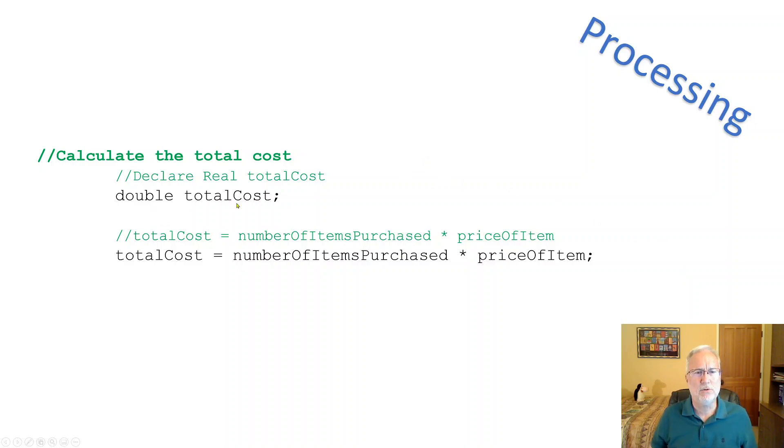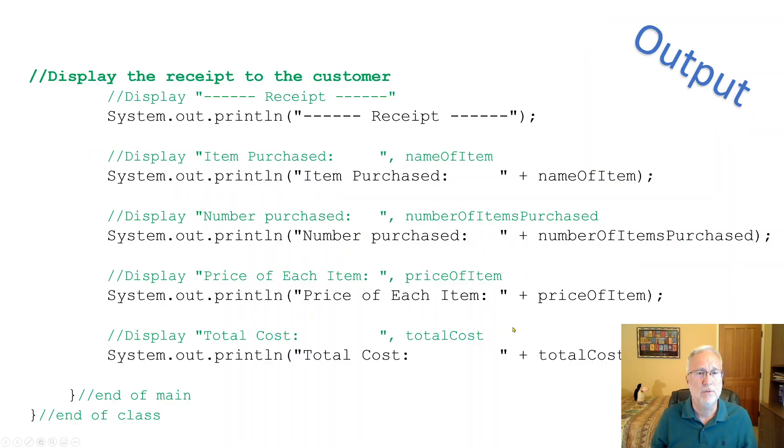Calculate the total cost. So here we got double totalCost. Very similar to the pseudocode. And look at that. We added a semicolon and it's the exact same thing as the pseudocode. Once you know that, it's pretty simple. Again.